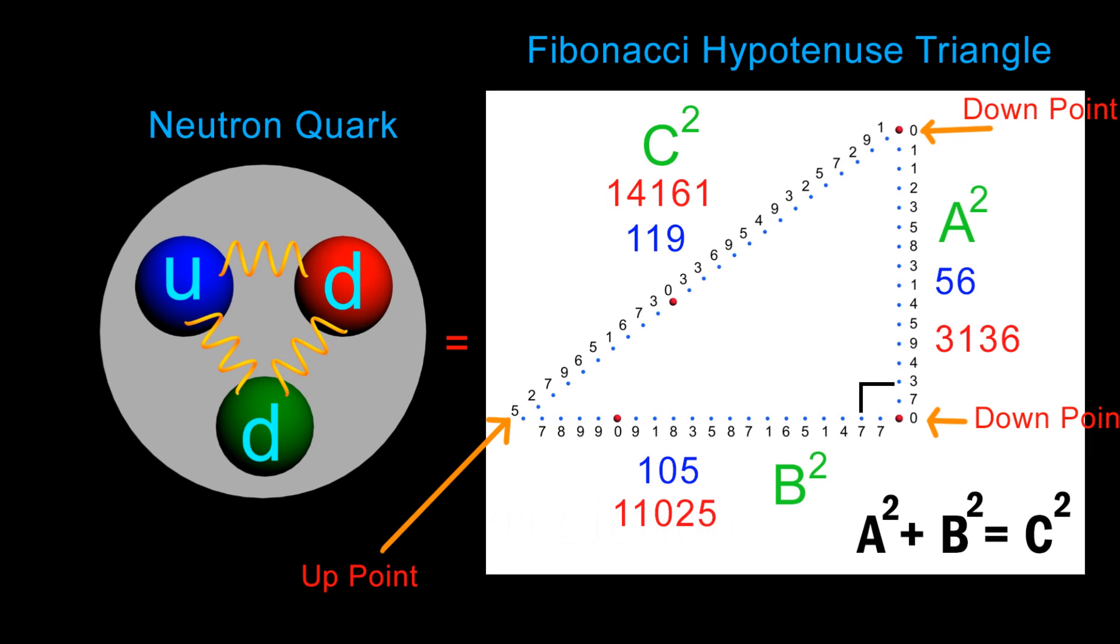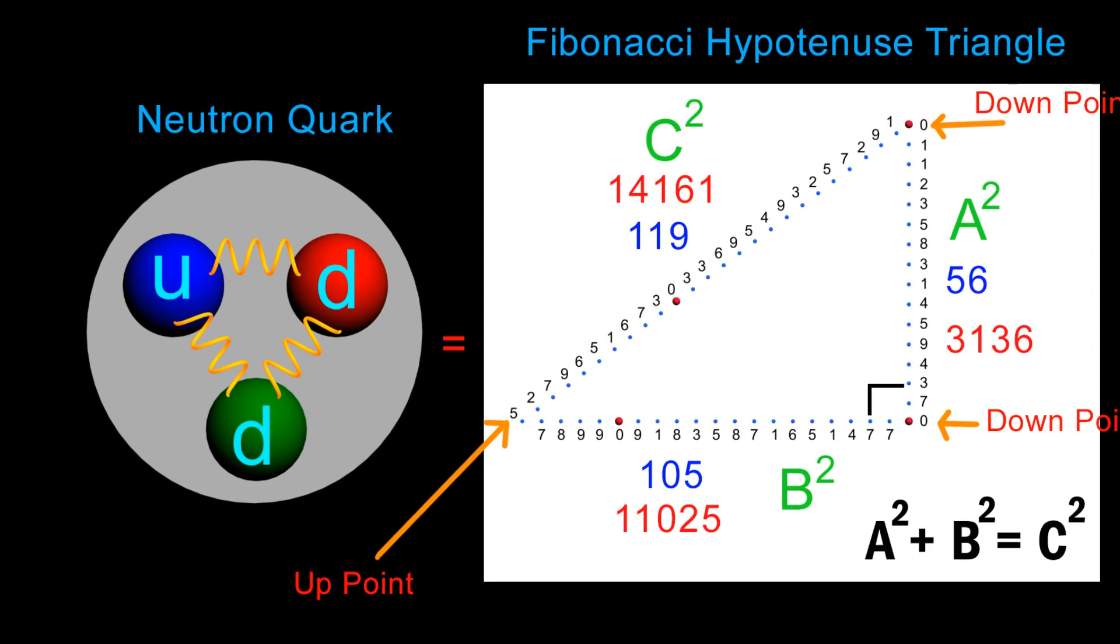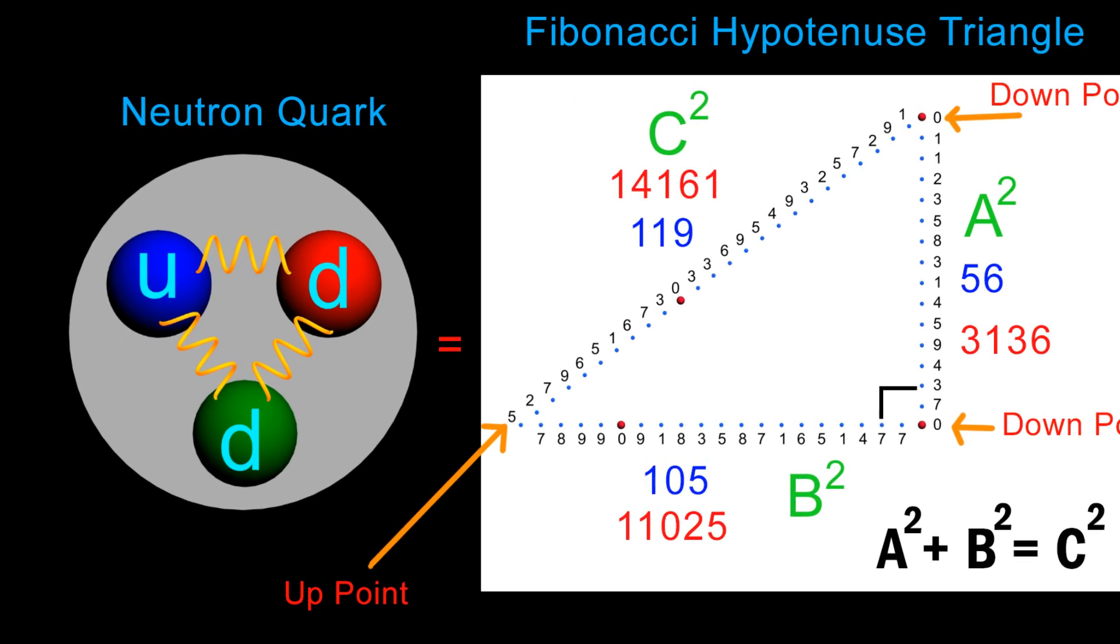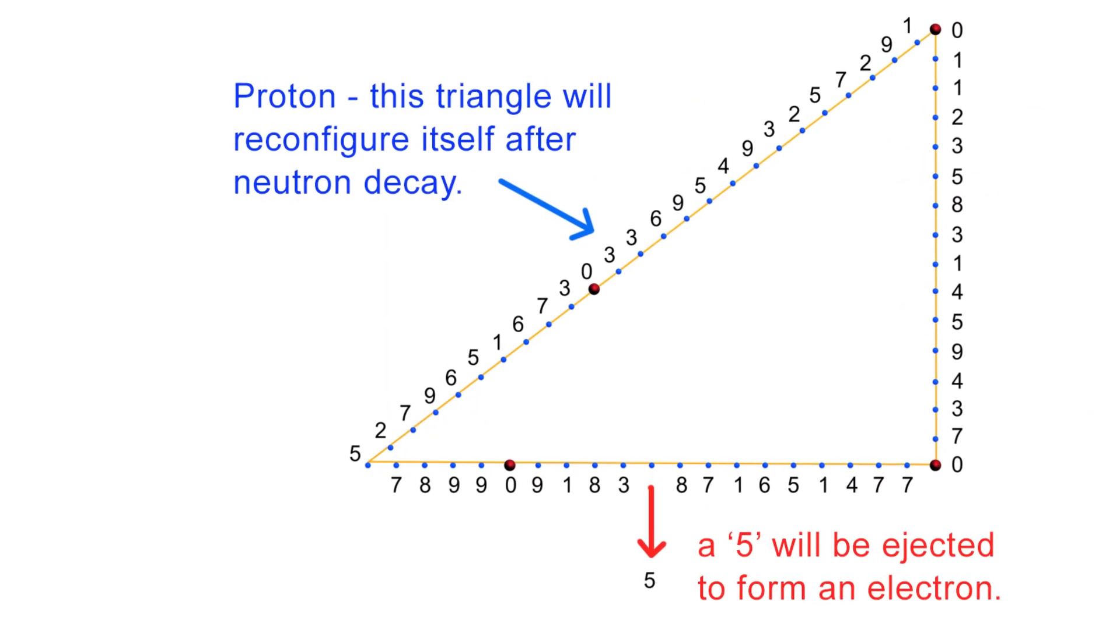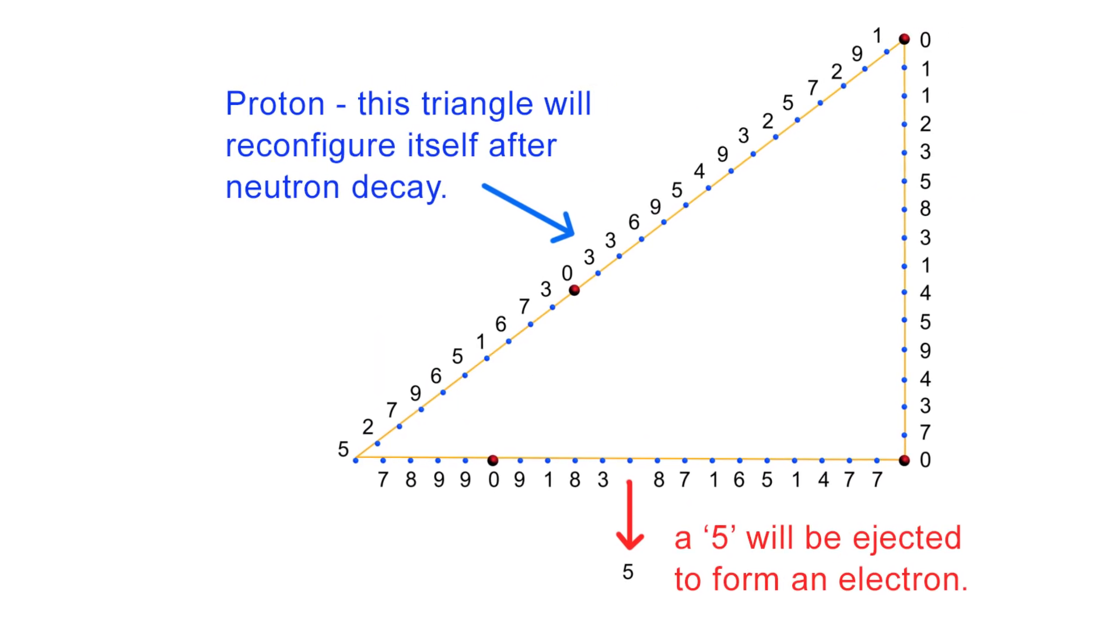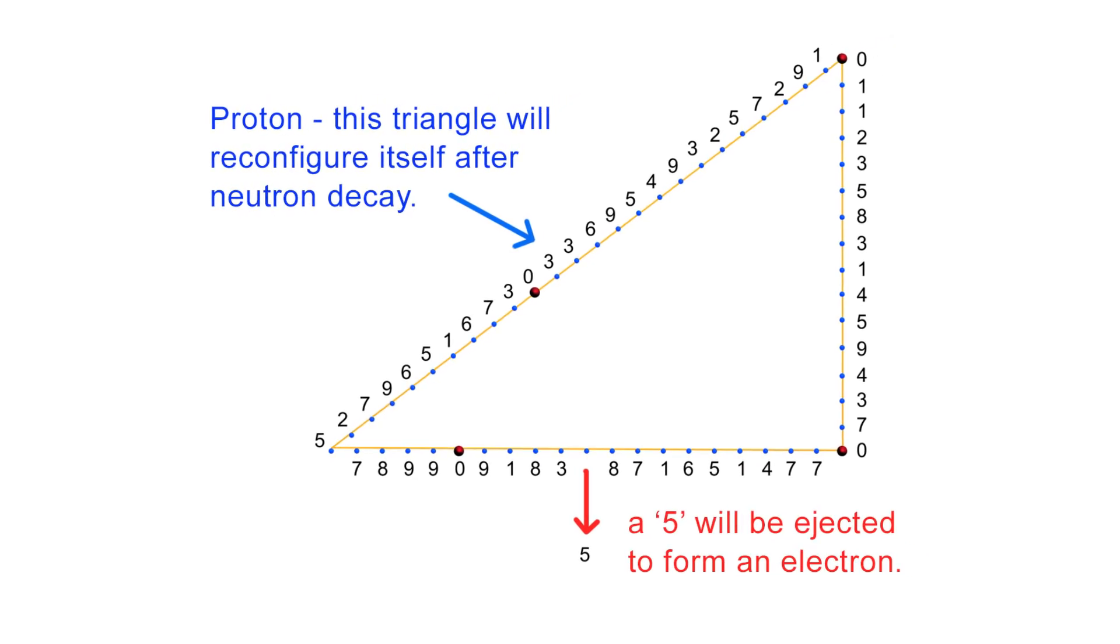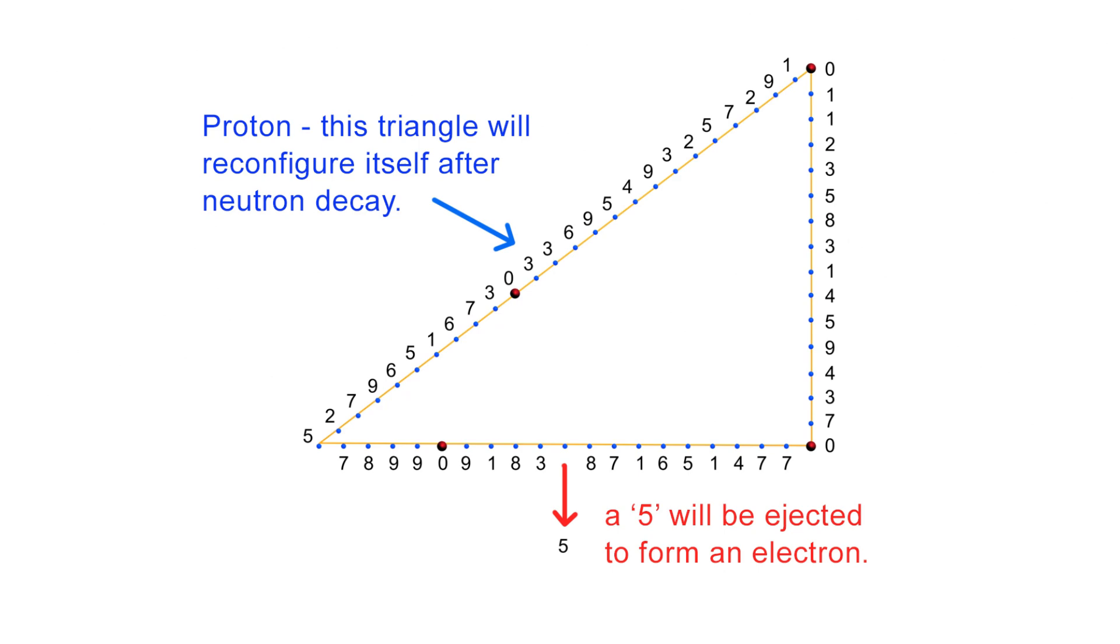Here is the incredible part. After I started to explain how I linked this Fibonacci hypotenuse triangle to a neutron, it immediately predicted that one of the Fibes would be forcefully ejected to become the electron when this virtual neutron decays into a virtual proton. I was stunned!